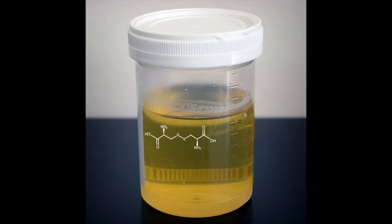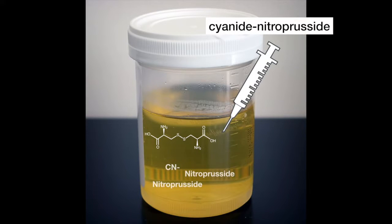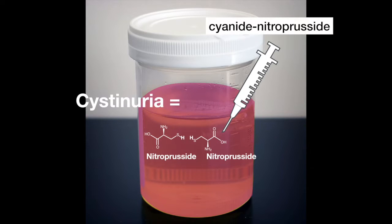A person suspected of having cystinuria should be given a urinary cyanide nitroprusside test. Cyanide will reach the cystine, turning it into cysteine. The nitroprusside binds and changes the color to purple. A positive test is diagnostic of cystinuria.